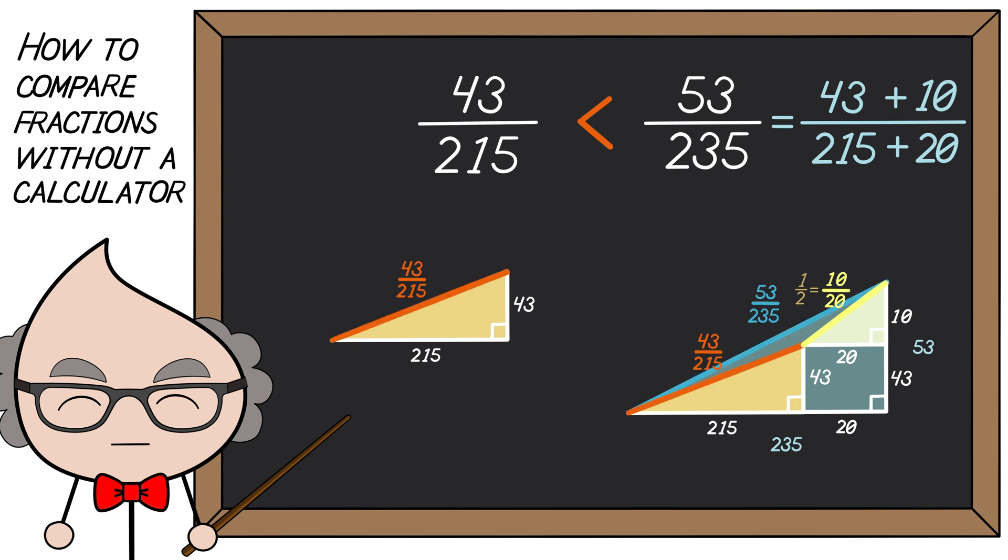On the other hand, if the slope of the second triangle is less than the slope of the triangle created by the first fraction, then the second fraction would be the smaller of the two.